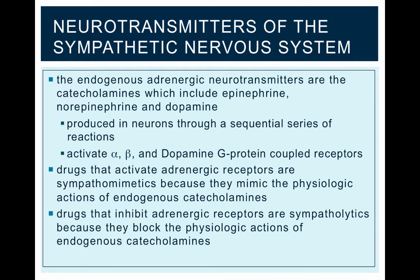The endogenous adrenergic neurotransmitters that signal in the sympathetic nervous system include the catecholamines, such as epinephrine, norepinephrine, and dopamine. These catecholamines are produced in neurons through a sequential series of reactions, and they ultimately activate alpha, beta, or dopaminergic G-protein-coupled receptors.